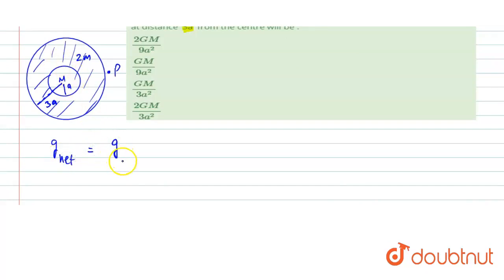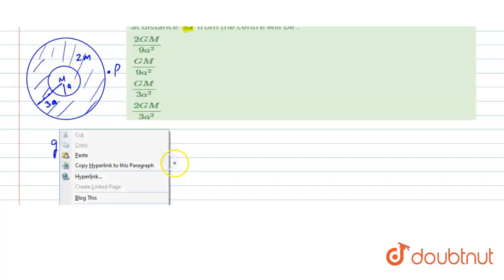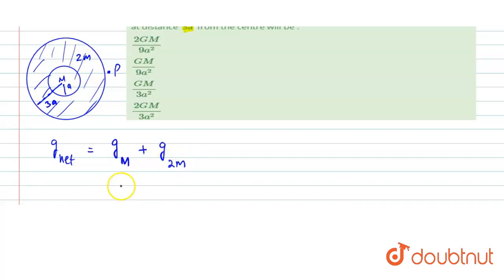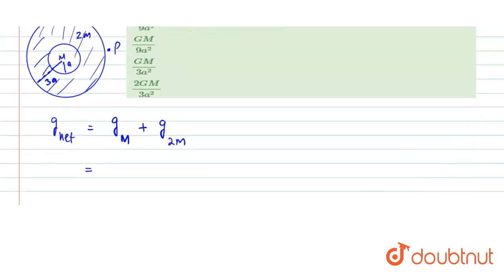gravitational field due to the solid sphere having mass M plus gravitational field due to the concentric sphere which has mass 2M. We can use the result here that if we have a solid sphere having mass M and radius r,